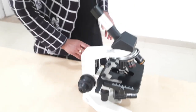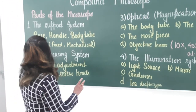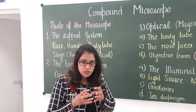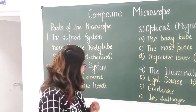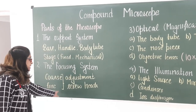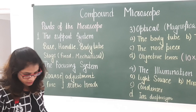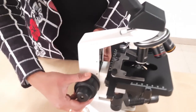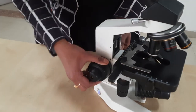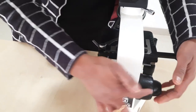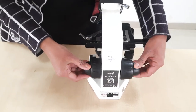The second system is the focusing system, which is used to focus the specimen. It consists of coarse and fine adjustment screw heads. You can see on both sides of the microscope there are coarse screw heads, and the smaller ones are the fine screw heads.